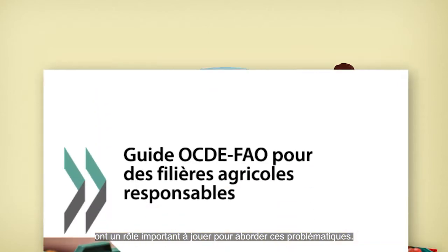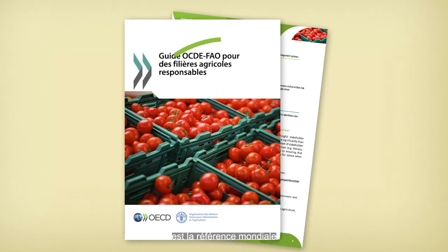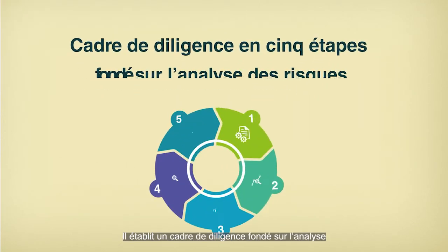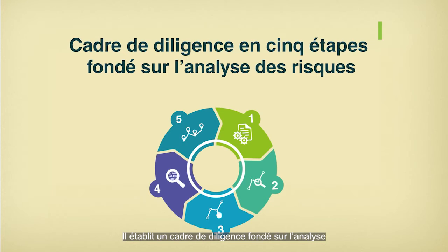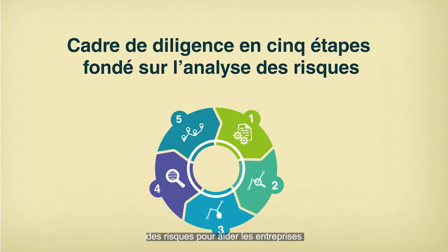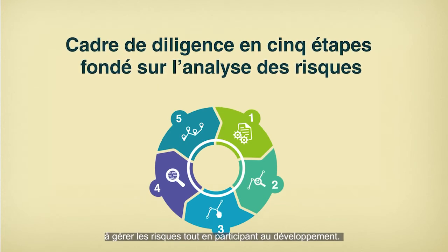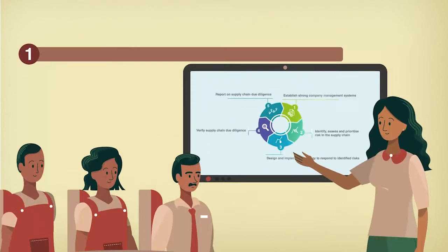Businesses in the agricultural sector have an important role to play in addressing these issues. The OECD-FAO guidance for responsible agricultural supply chains is the global standard for responsible business conduct in the agricultural sector. It introduces a five-step framework for risk-based due diligence to support companies in managing risks while contributing to development.